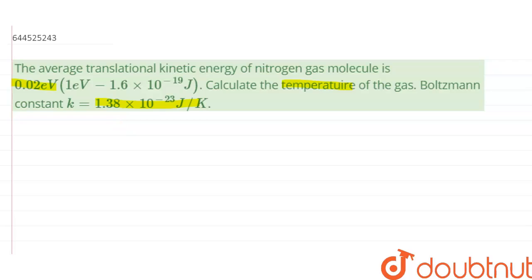The formula for average translational kinetic energy is given by 3/2 kT, where k is the Boltzmann constant and T is the temperature.